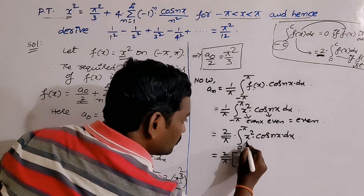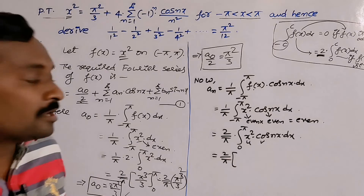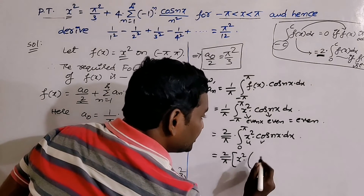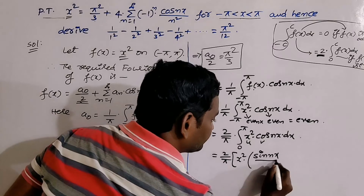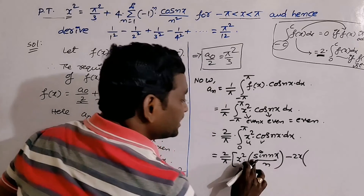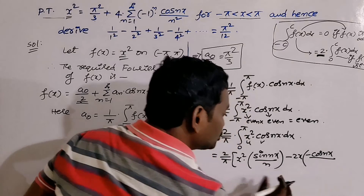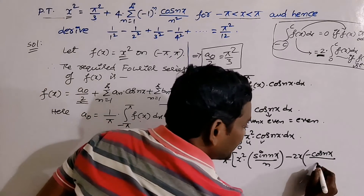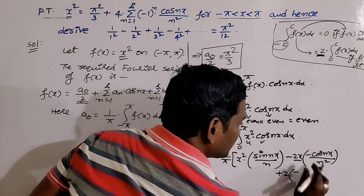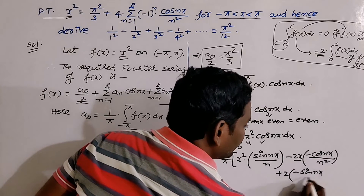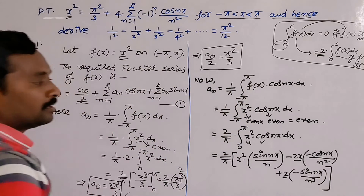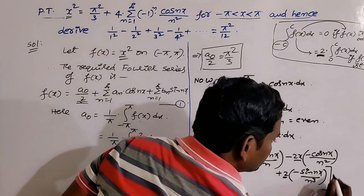Now apply the UV rule: (2/π) times [x² · sin(nx)/n − 2x · (−cos(nx)/n²) + 2 · sin(nx)/n³] from 0 to π. Remember: sin(nπ) = 0 and cos(nπ) = (−1)ⁿ. Apply the upper limit π: the first term has sin(nπ) = 0, so it vanishes. The second term gives +2π · cos(nπ)/n² = 2π(−1)ⁿ/n². The last term also has sin(nπ) = 0.